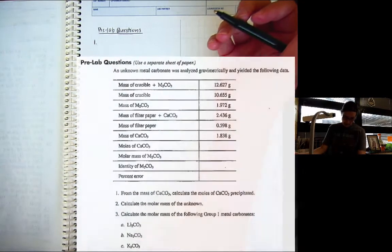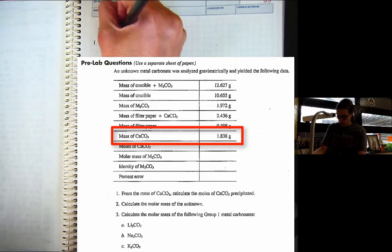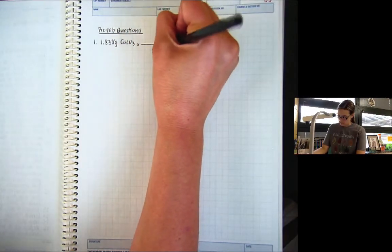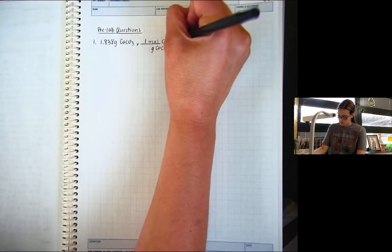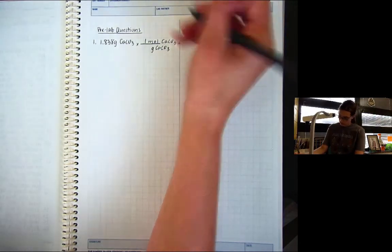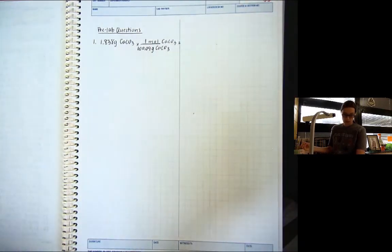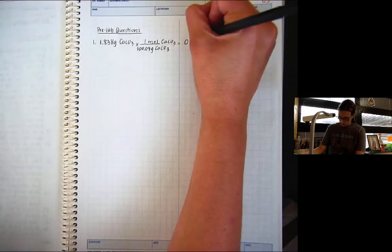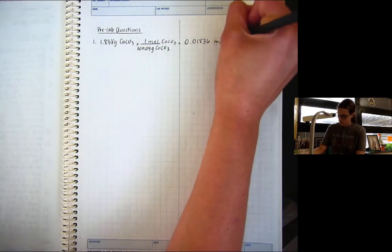So I want the moles of CaCO3. So from the mass of CaCO3, which in the data table is 1.838 grams, I just want to go to moles. So I'll use the molar mass, and I'll go to moles, and the molar mass, 100.09 grams. And so this equals 0.01836 moles of CaCO3.